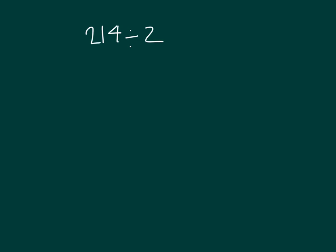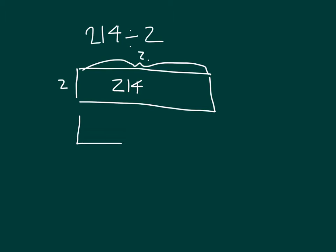Here we have 214 divided by 2. Let's start by drawing a rectangle with an area of 214 square inches with a width of 2 inches. So there's the width. Here's 214. What we're trying to figure out is, is there a way that we can partition this using the area model where it's an easier problem to solve?